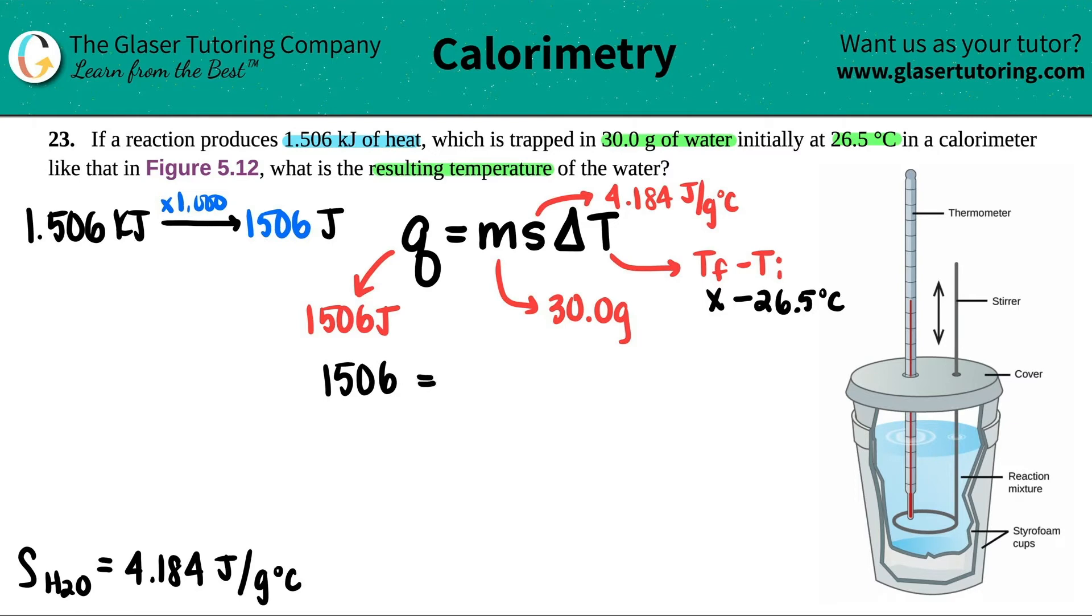1506 equals the 30 times 4.184 and then times X minus 26.5. Now, the math gets a little tricky, but remember our algebra rules. The first thing we're going to do is multiply these two numbers together. So we got 1506 equals 30 times 4.184. So I get 125.52 and then X minus 26.5.